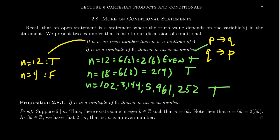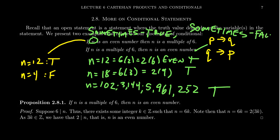We can actually prove the second conditional is always true regardless of n. But the first one was sometimes true — like when n was 12 — and also sometimes false — like when n equals 4. Because of these two phenomena, one always true and the other sometimes true, we have to be more careful when talking about conditionals when there are variables in play.